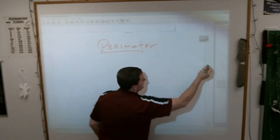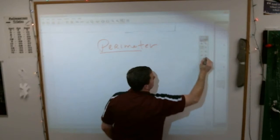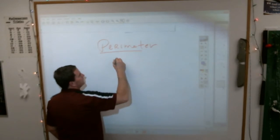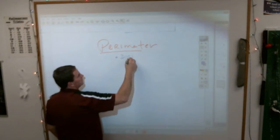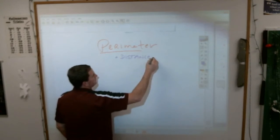Perimeter simply means, anybody know what perimeter means? The distance around. Distance around.